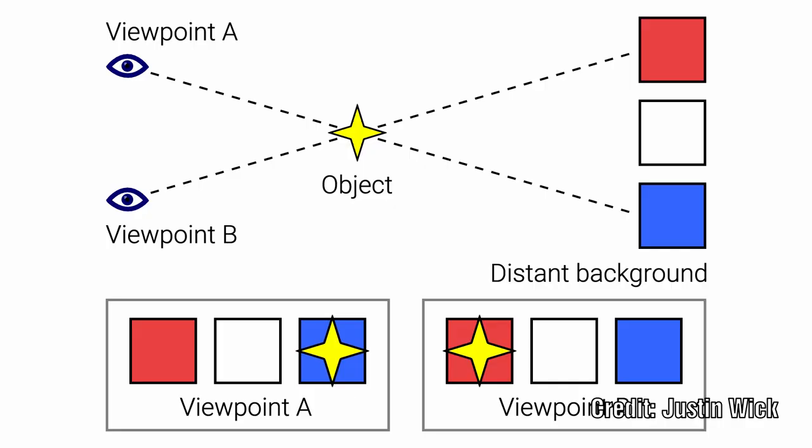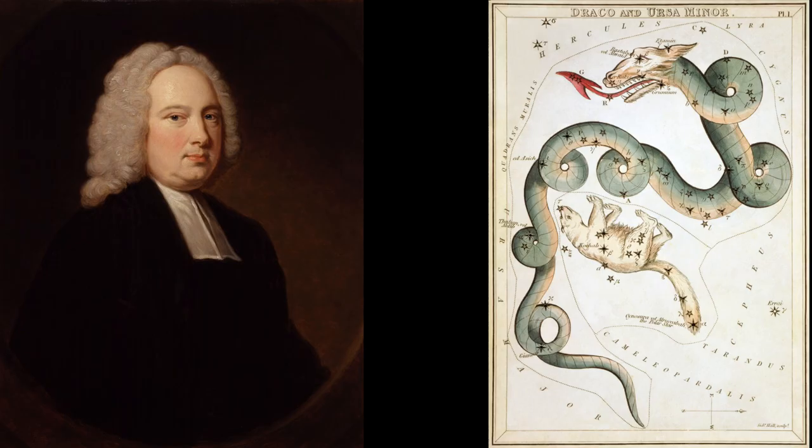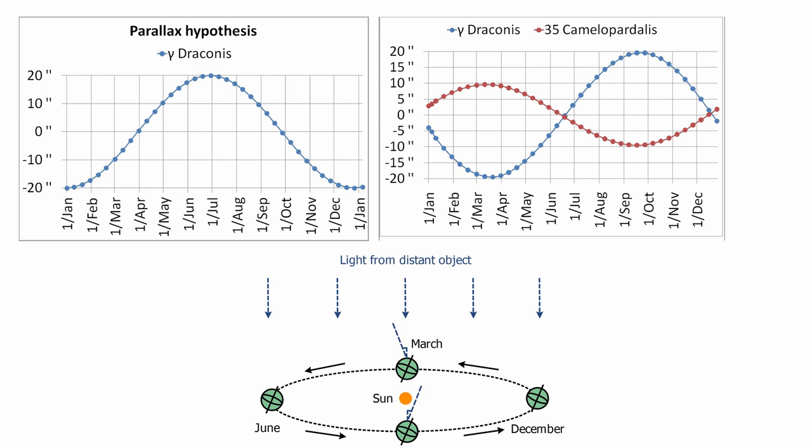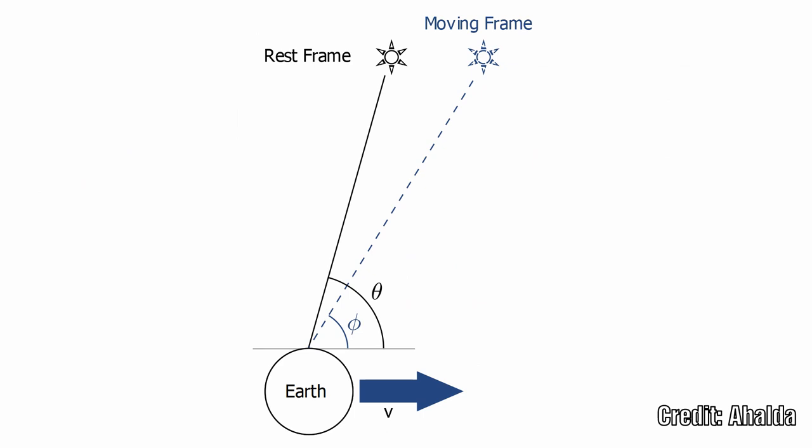In 1728 James Bradley attempted to determine the parallax of a star in the head of the dragon. What he discovered was that during the winter the transit across the meridian was actually more southerly while during the following summer its original position was restored by a motion northwards. This effect could not be explained by parallax, but instead was caused by the gradual propagation of light.